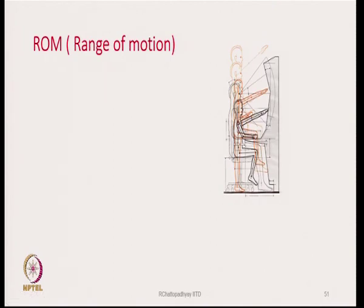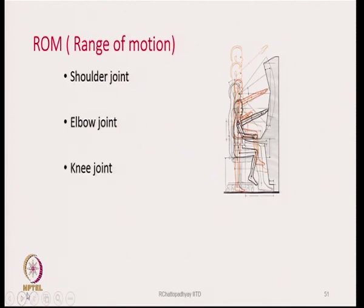Next comes another aspect — range of motion — which is also important from a design point of view. Range of motion of humans is studied in respect to shoulder joint movement, elbow joint movement, and knee joint movements. If we know how much the elbow, shoulder, or knee will move while a person is doing a certain task in a certain posture, then accordingly the object with which the person is going to interact can be designed, and also the clothing has to be such that the range of motion does not get restricted.